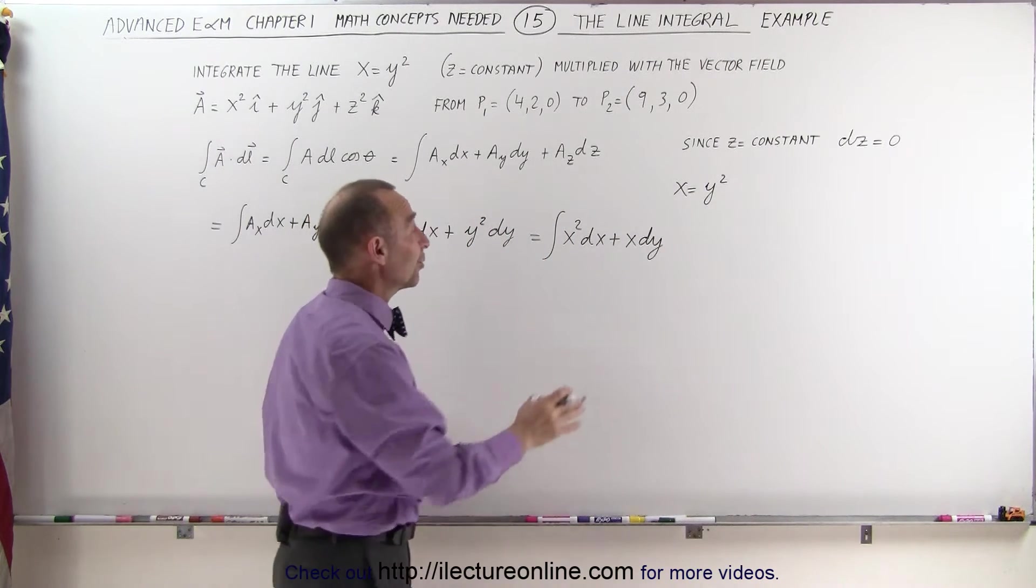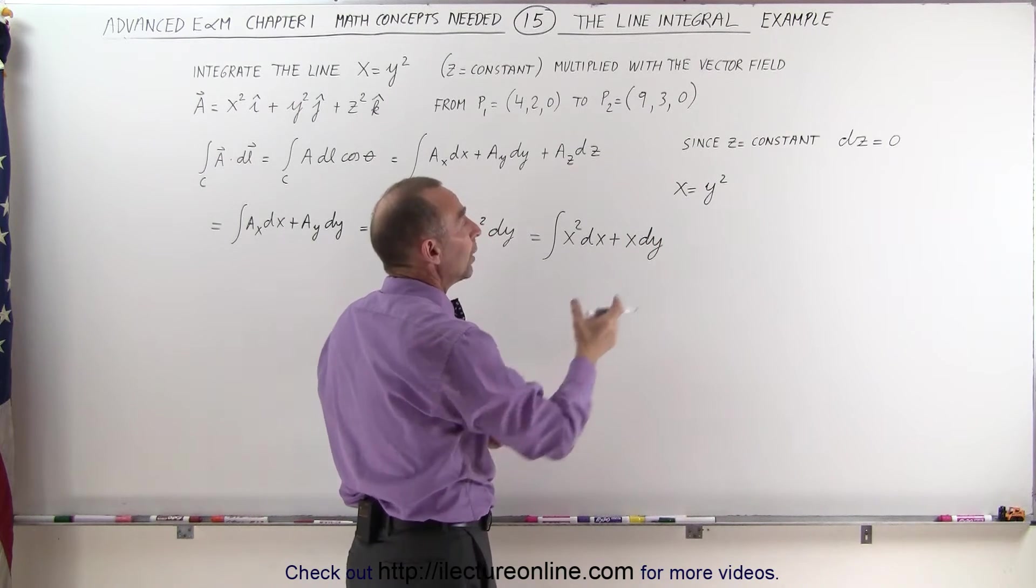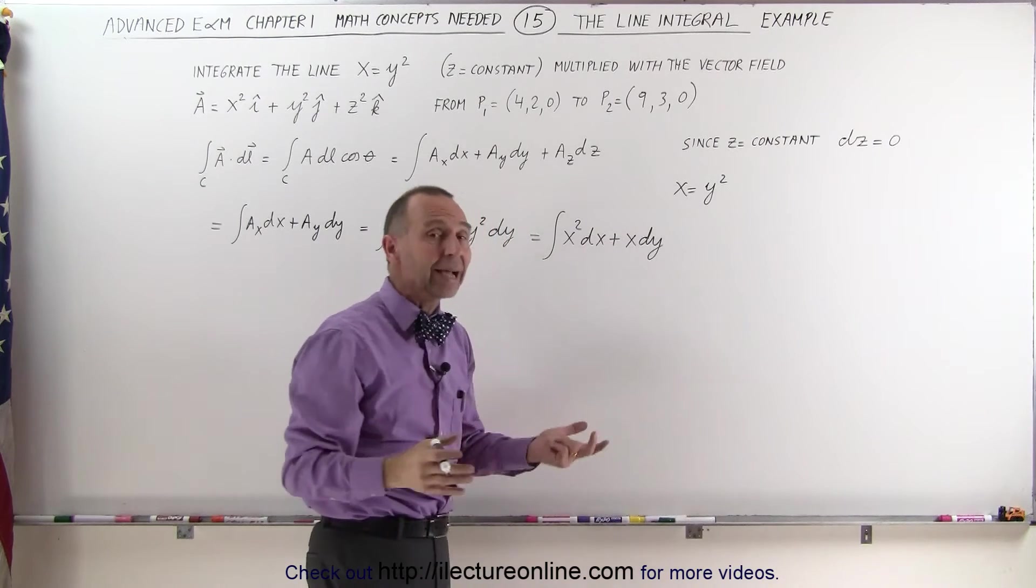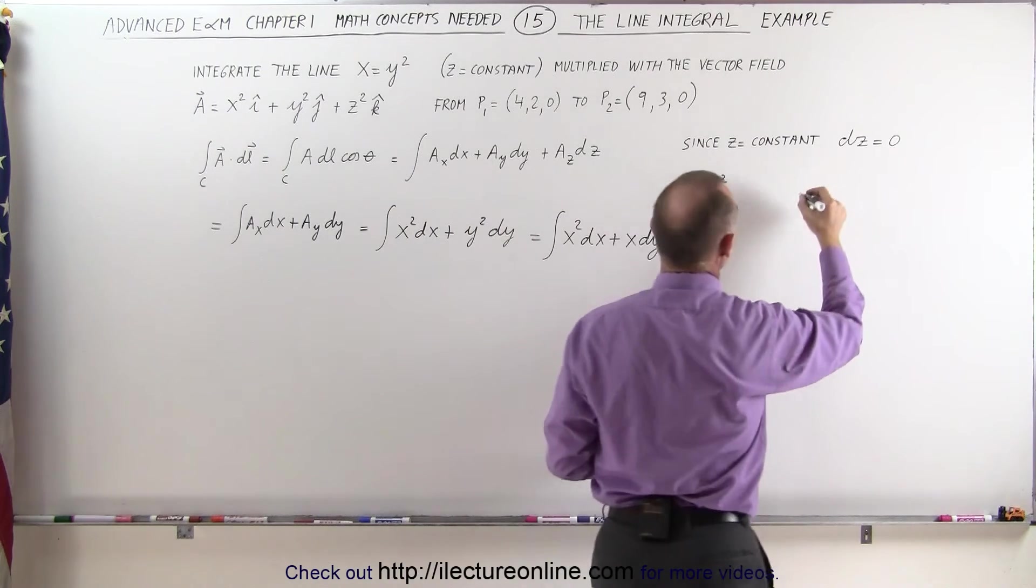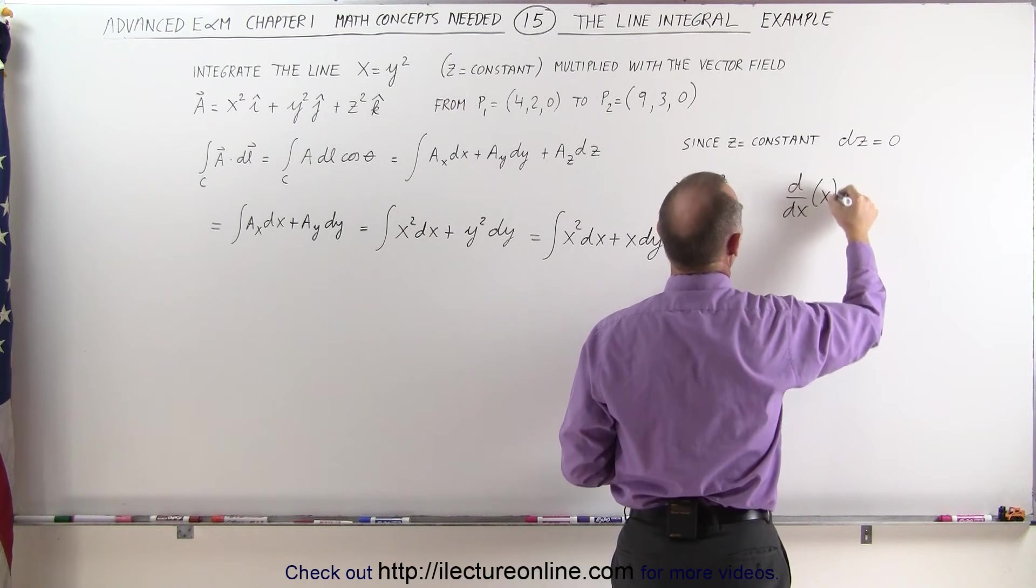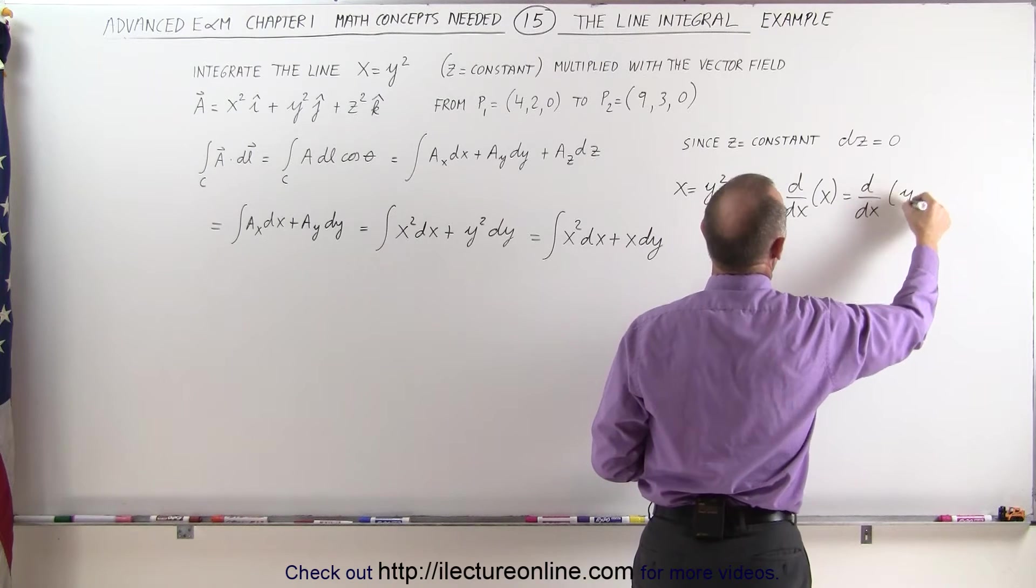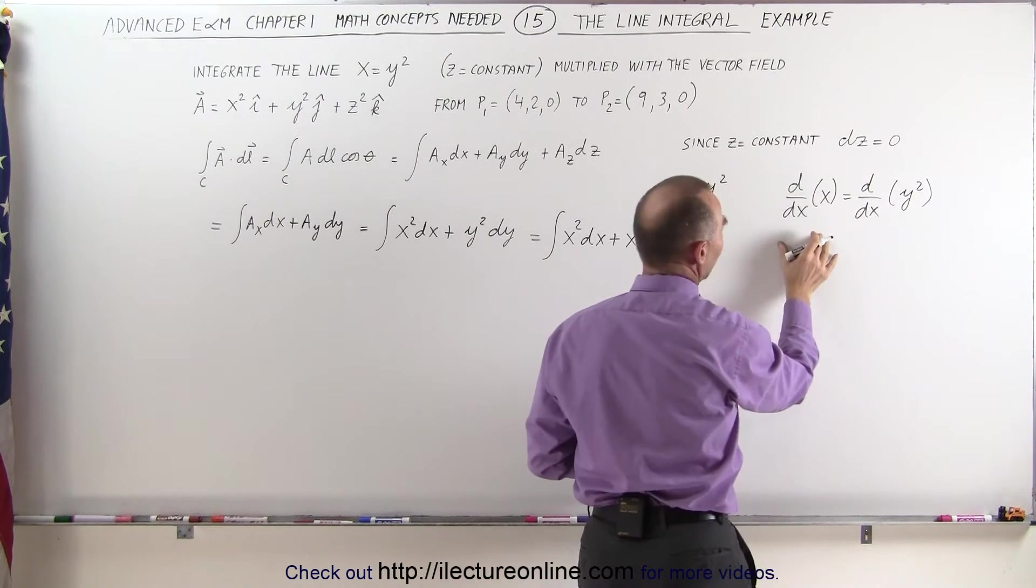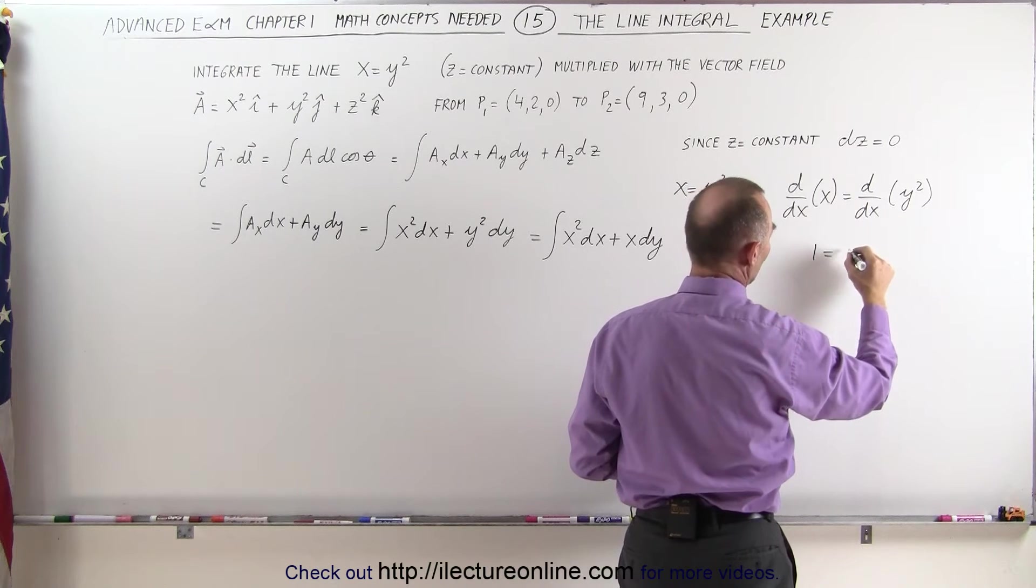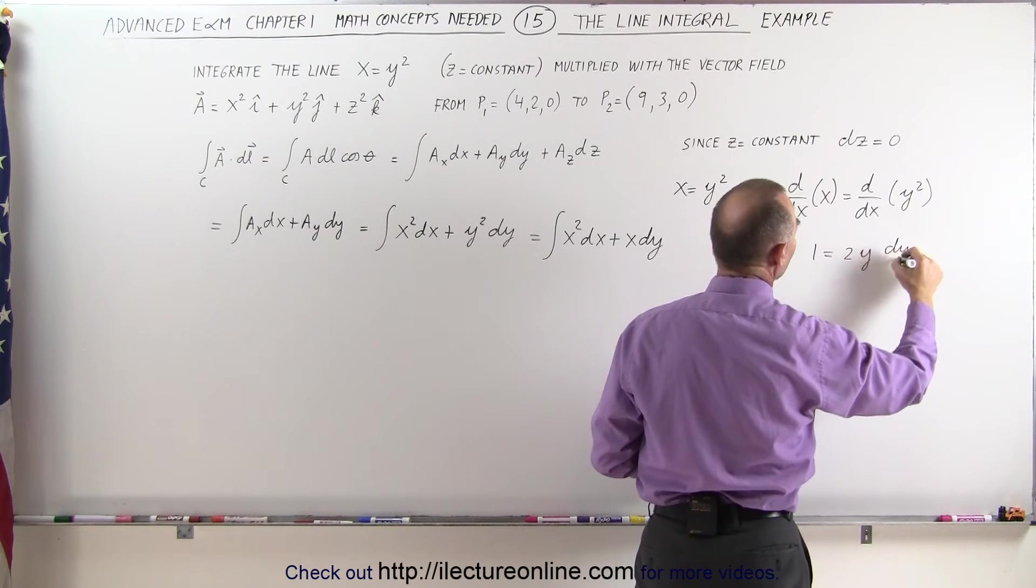We're still not quite there yet, because we can have a dy here, so to find the value of dy, we can take the differential or the derivative of both sides with respect to x and see what we get. So we're going to take the d dx of the left side and set it equal to the d dx of the right side, y squared. So the left side, the d dx of x, becomes 1, equals the d dx of y squared, that would be 2y to the first power, times dy dx.